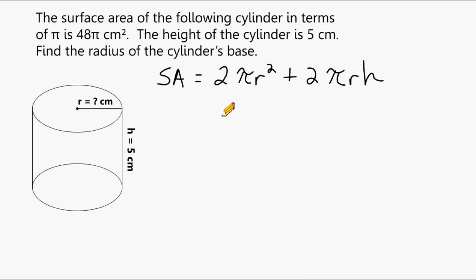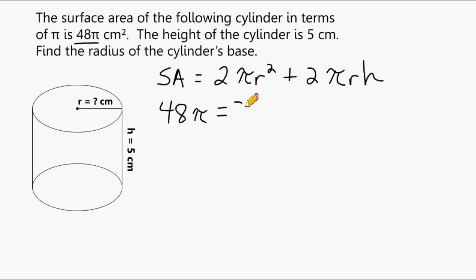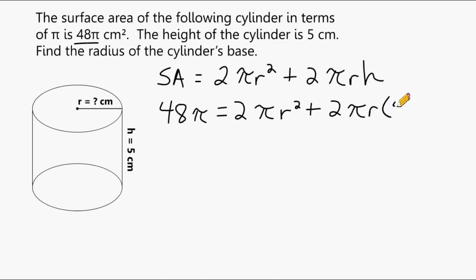The first thing we're going to do is substitute everything that is given in the problem. The surface area is given, so we're going to replace SA with 48 pi. That equals 2 pi r squared, plus 2 pi r multiplied by 5, because the height of our cylinder is 5, so we replace h with 5.